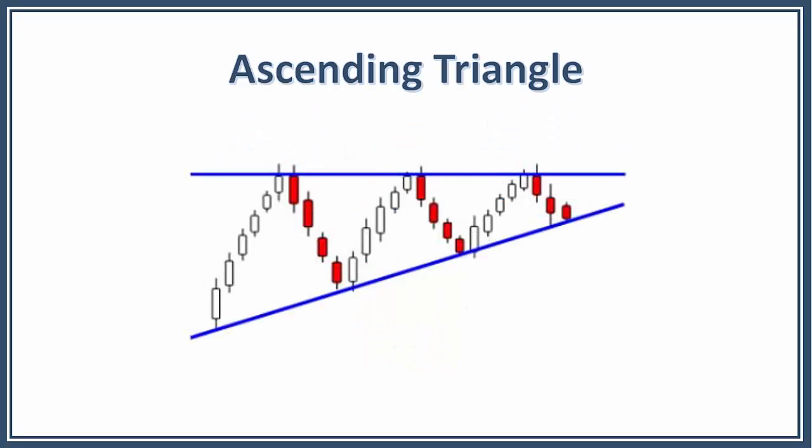Ascending triangles are generally considered bullish and are most reliable when found in an uptrend. The top part of the triangle appears to be flat, while the bottom part has an upward slant. In ascending triangles, the market is becoming overbought and prices are turned back. Buyers then re-enter the market and prices soon reach their old highs, where they are once again turned back.